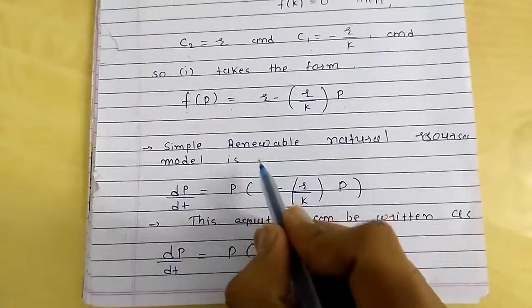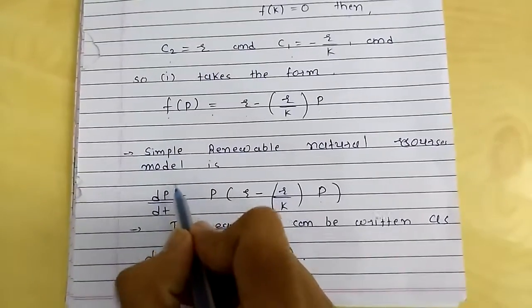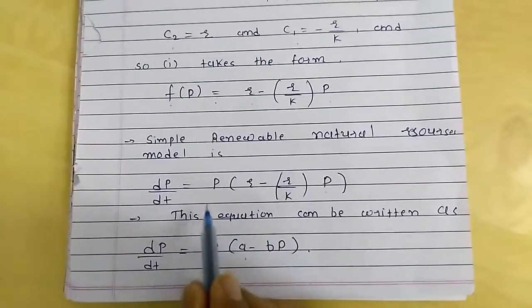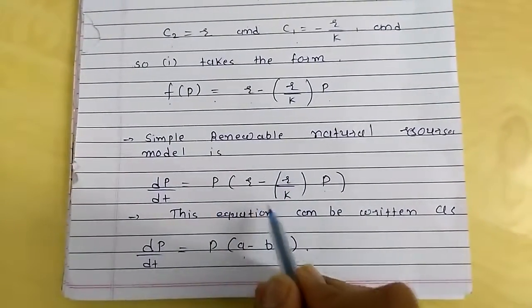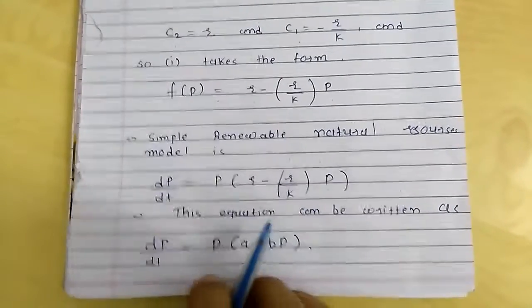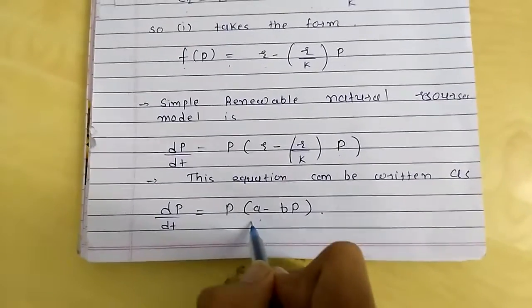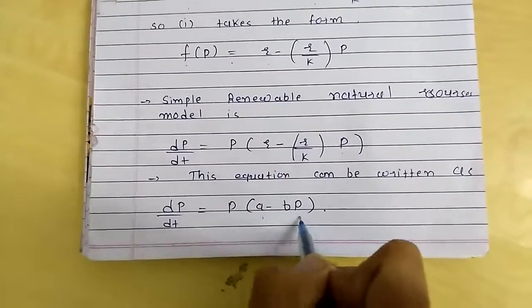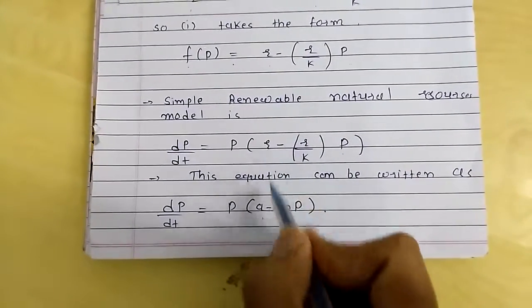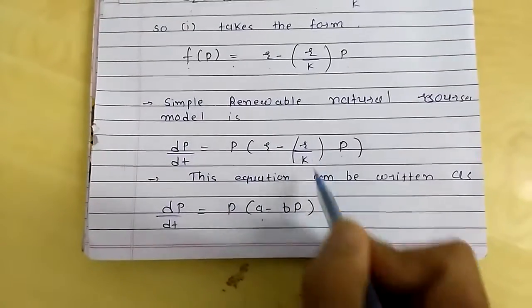So, the simple renewable natural resources model is dp/dt equals p times (r minus (r/k)p). This equation can be written as dp/dt equals p(a minus bp), where a equals r and b equals r/k.